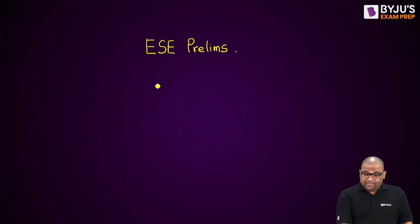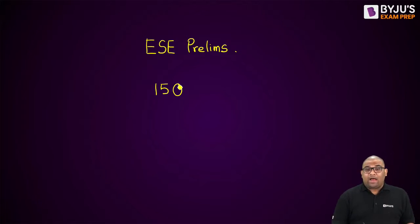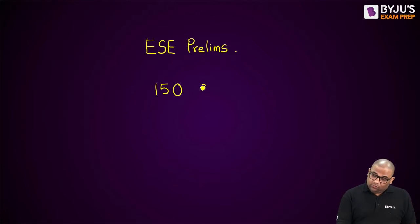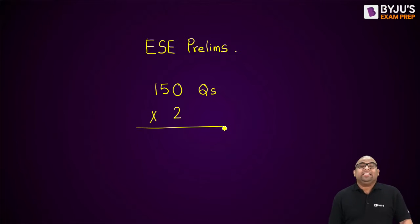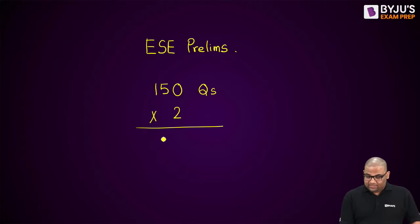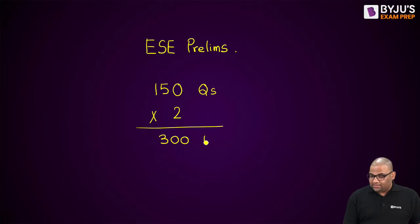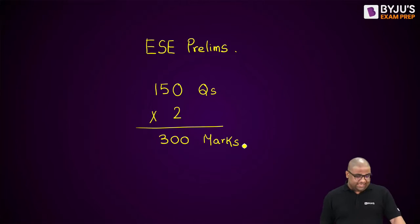This is about the civil engineering paper. In the civil engineering paper, there are 150 questions, each question is worth two marks, making it 300 marks total. Now if we look at GATE, certain subjects have more weightage in GATE.